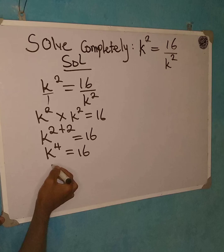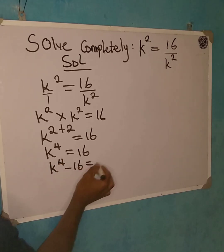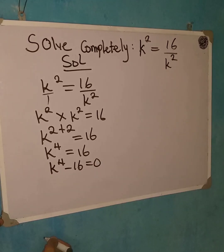Now, this is what we do. The first thing is that we'll have to say this: k to power 4 minus 16 is equal to 0.